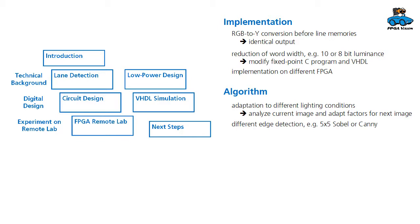To improve the algorithm, you could adapt the processing to different lighting conditions. For this task, you would analyze the conditions in the current image and adapt factors in the algorithm for the next image. Or to change the algorithm, you could try another edge detection, for example a 5x5 Sobel filter or the Canny algorithm.